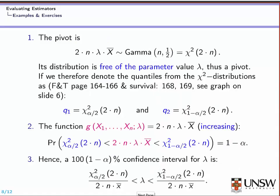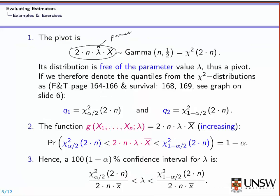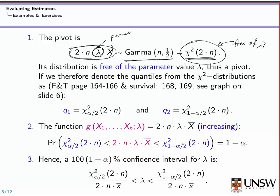The pivot, this random variable, is a function which depends on lambda. But looking at the MGF of this random variable, you can identify the MGF of a known distribution using the book of formulas and tables. The distribution corresponds to the gamma distribution with these parameters, which is in fact the same as the chi-squared distribution with 2n degrees of freedom. So you can see that the pivot itself depends on the parameter of interest but follows a known distribution which is free of lambda. This confirms that 2n times lambda times x-bar can be used as a pivot.